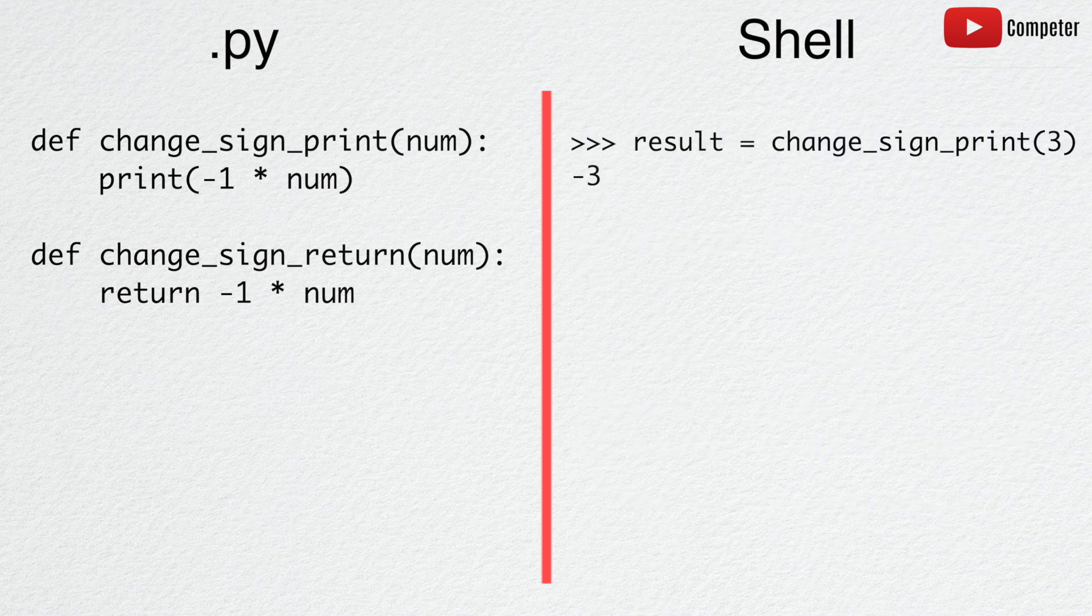Here, we assign the function change_sign_print to a variable called result. Negative 3 is printed to the shell, because of a print function inside of the called function.